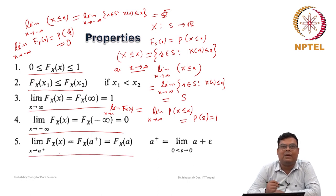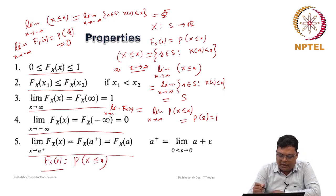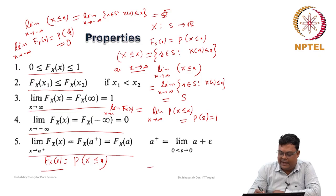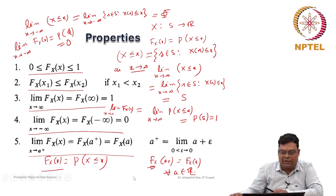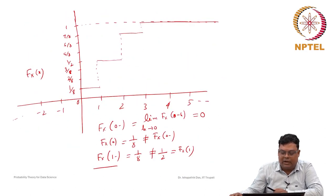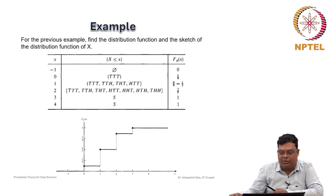Additionally, the CDF is always right continuous: F(a⁺) = F(a) for all real a. There may be left discontinuities, as we saw in the example, but from the right side it is always continuous. These are the key properties of the cumulative distribution function.